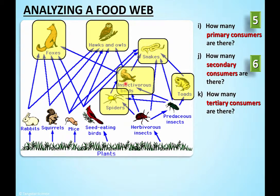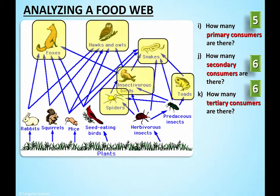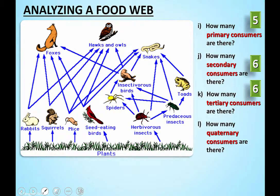You can do the same thing with the snakes and all the others - you can prove they're all tertiaries. Look at the fox: if you go through the rabbit, you get plants, primary, secondary; but if you go through the bird you get plant, primary, secondary, tertiary. So you can be more than one trophic level - and actually, that's a scary thing. I'll show you why in a second.